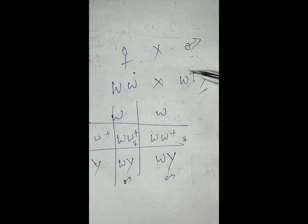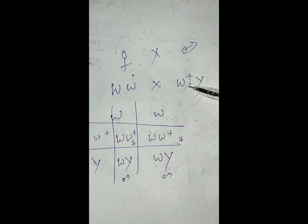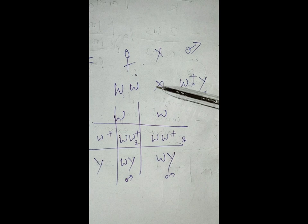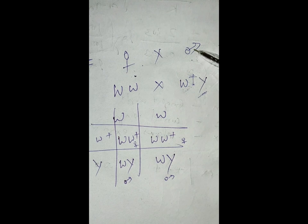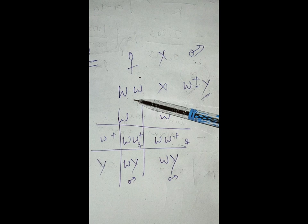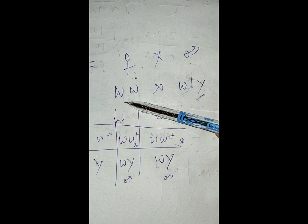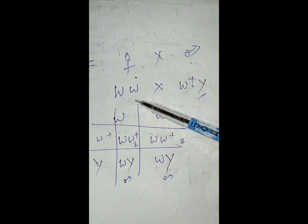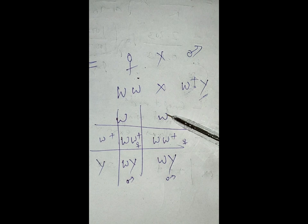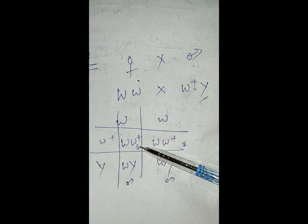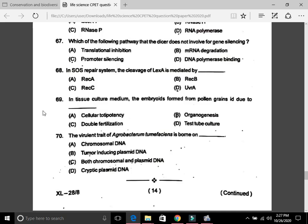Now solving question 28: A white-eyed female is crossed with a red-eyed male Drosophila. Red color is the wild type; white eye is a mutation. Eye color is X-linked. The male is represented as X^(w+) Y and the white-eyed female as X^w X^w. Gametes from the female are X^w; from the male are X^(w+) and Y. The offspring are: X^w X^(w+) — red-eyed females, and X^w Y — white-eyed males. So the result is red-eyed daughters and white-eyed sons.